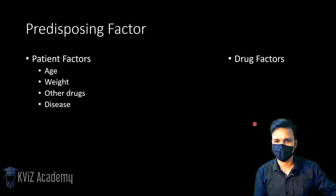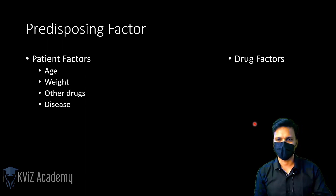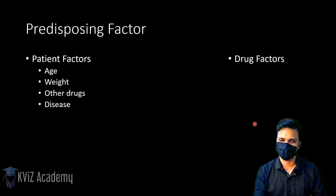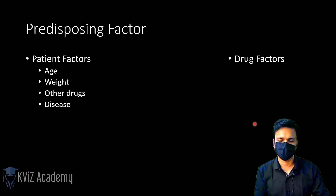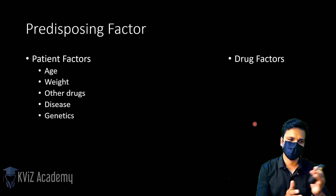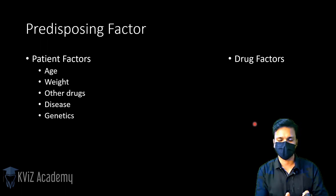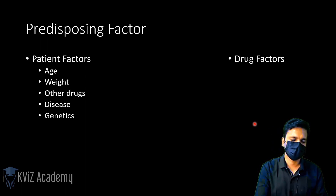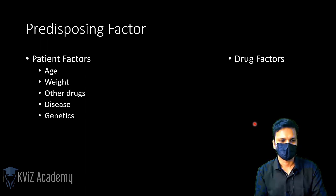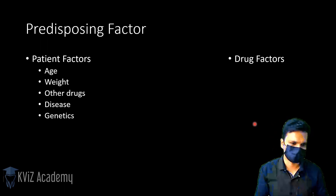The next factor is disease history. As discussed with age, renal failure or hepatic failure increases the chances of overdose reaction. Regarding genetics, in the case of amides, genetics do not play a major role. However, in the case of esters, a genetic condition called pseudoplasma cholinesterase prevents proper biotransformation of esters, which may lead to toxicity. Since we are discussing lidocaine, genetics does not play a major role here.